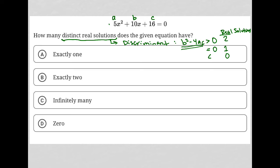For b², I'd have 10² - 4 times a, which is 5, times c, which is 16. 10² is 100 minus, let's just go down the line here. So it becomes minus 20 times 16. This becomes 100 minus 320.